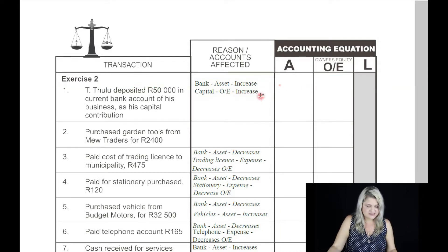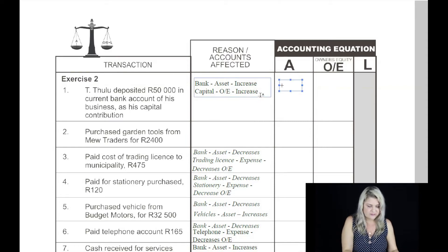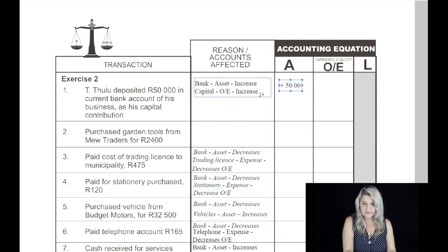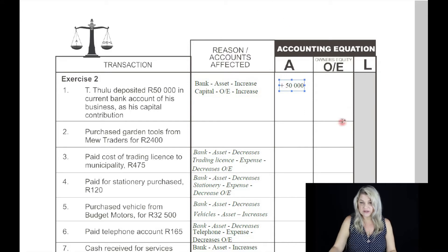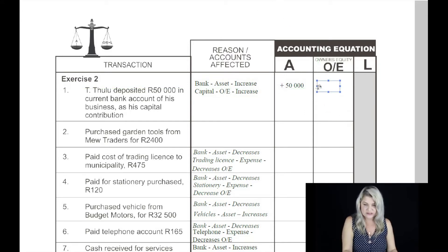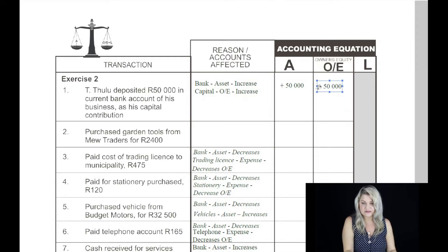So what would we say? Assets have been increased by 15,000 Rand, and we said that the owner's equity account — because capital is the owner's equity account — also increases by 15,000 Rand.